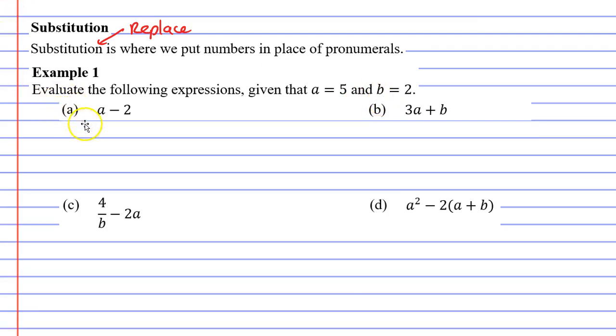Looking at question a, you'll notice the question says a minus 2 and we are told that a equals 5, which means we're going to replace the a with the number 5. It now becomes 5 minus 2. We substituted a equals 5 into the expression a minus 2, or we can say we replaced the a with the number 5. 5 minus 2 equals 3.